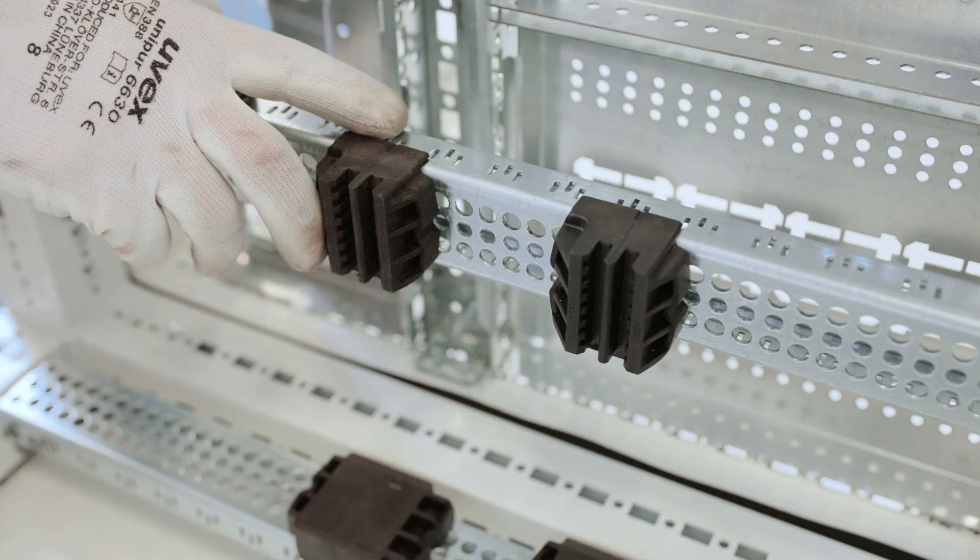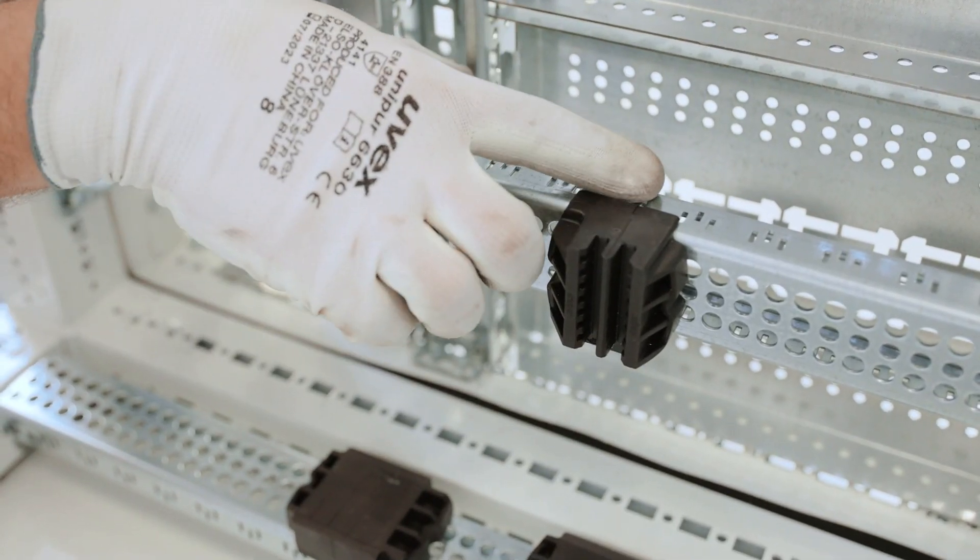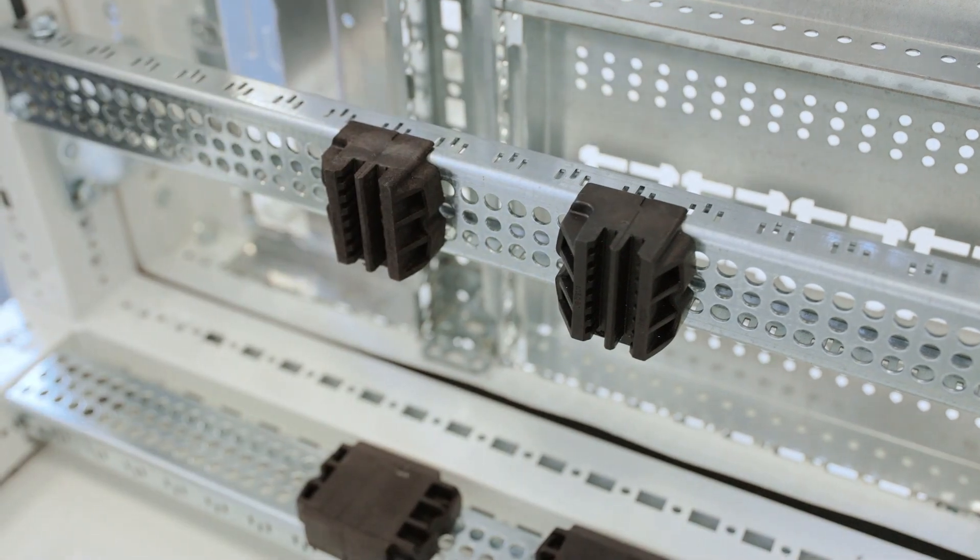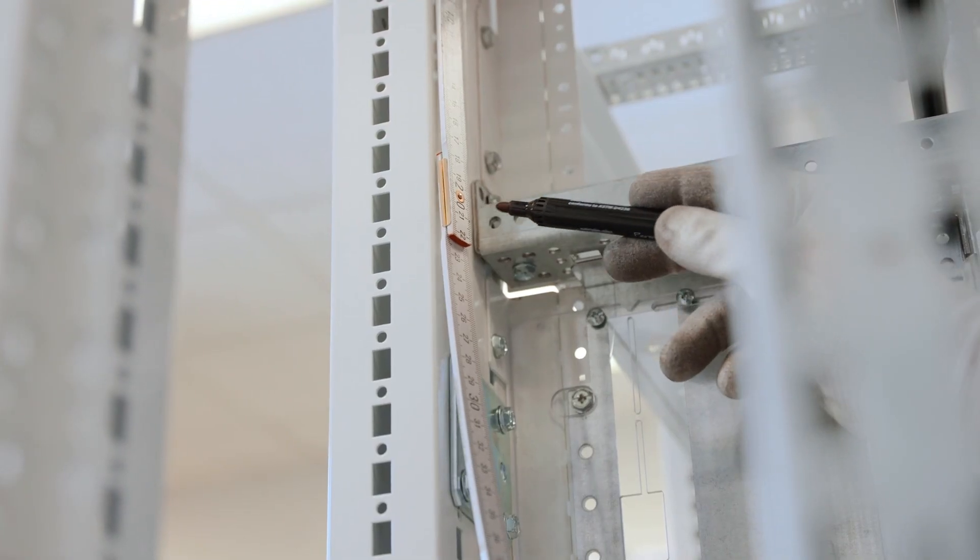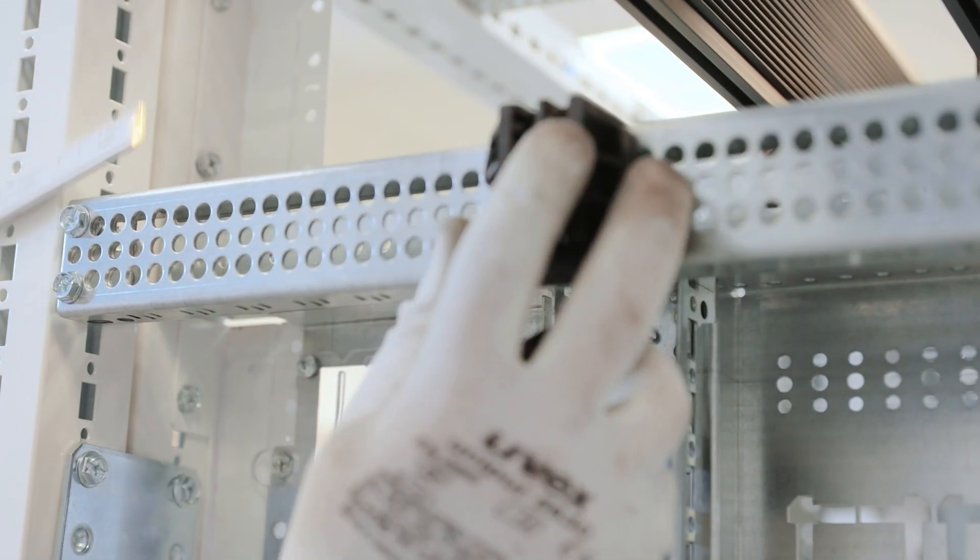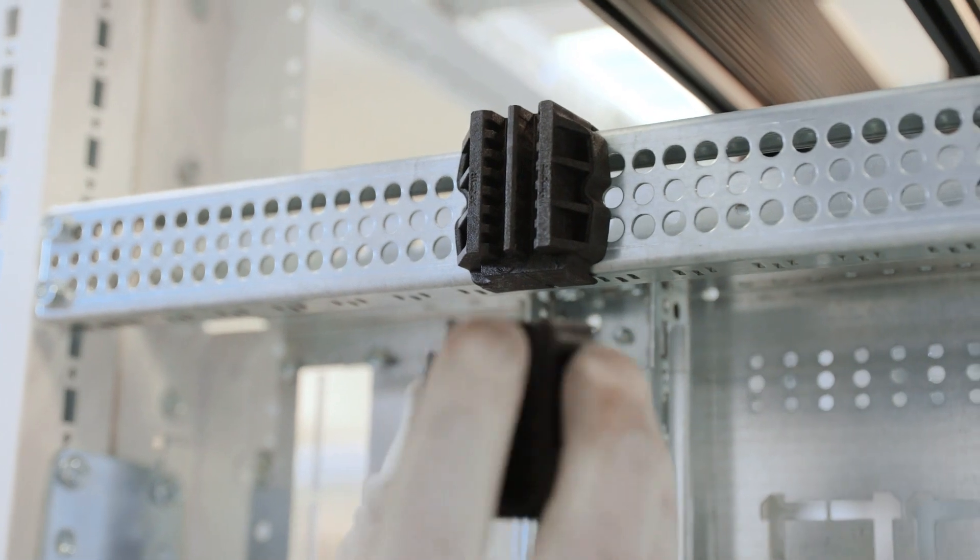Put in the bar and tighten the screws. Put the supports in at the same distance as the others. For the upper rail, the distance is 20 centimeters. Always put in the supports at the correct phase distance.